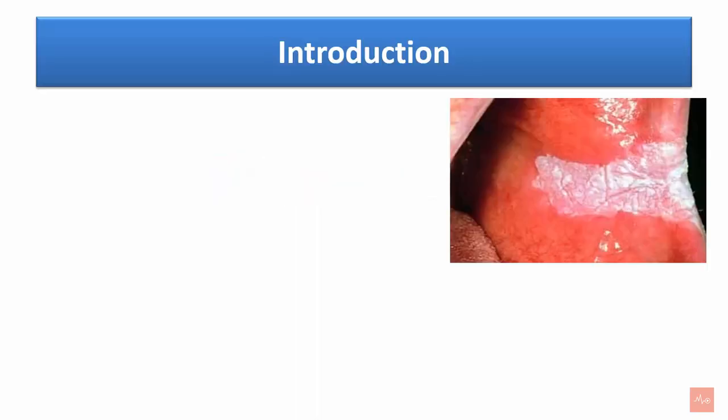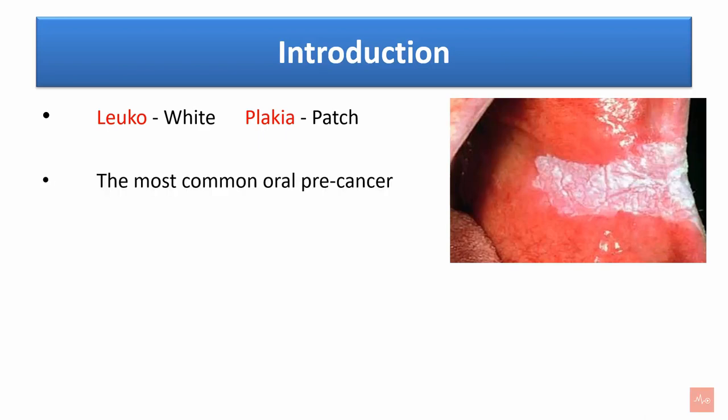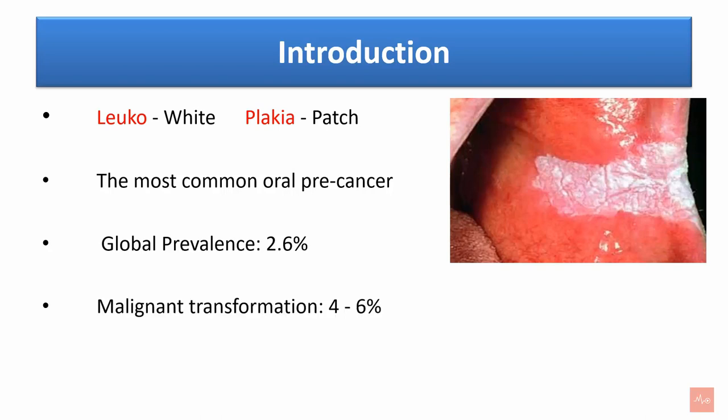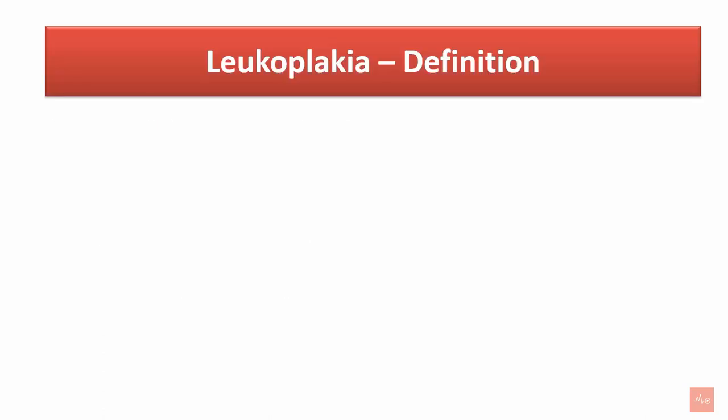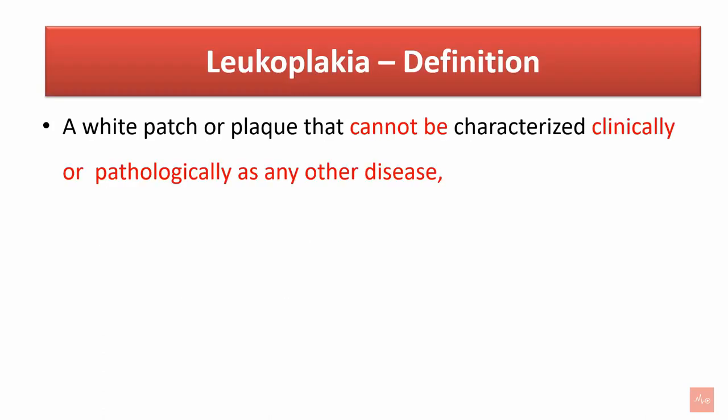Welcome back to MediClass. Leukoplakia — leuco meaning white, plakia means patch. It is the most common oral precancerous lesion with a global prevalence rate of 2.6% and has a malignant transformation rate of 4 to 6%.